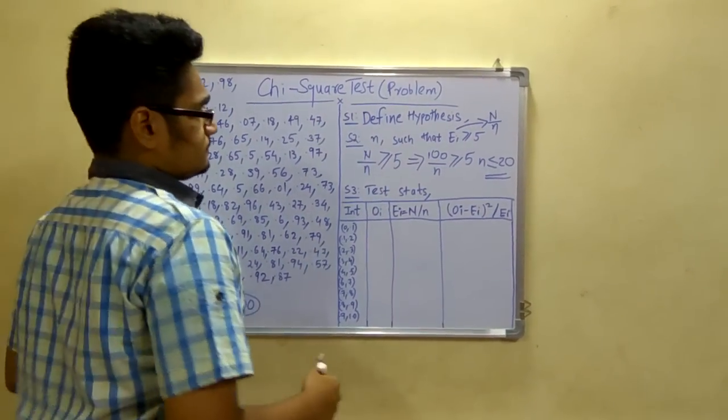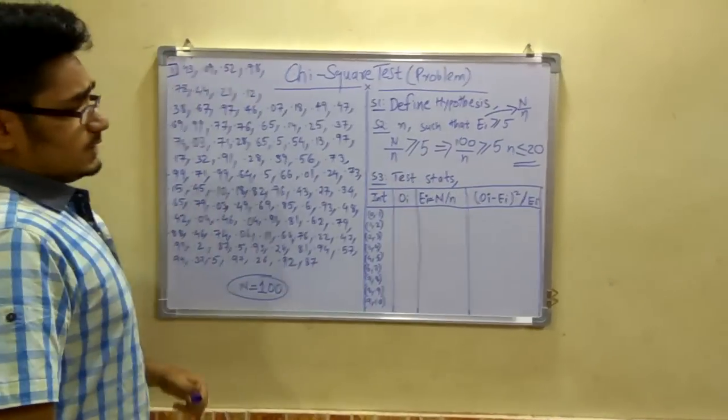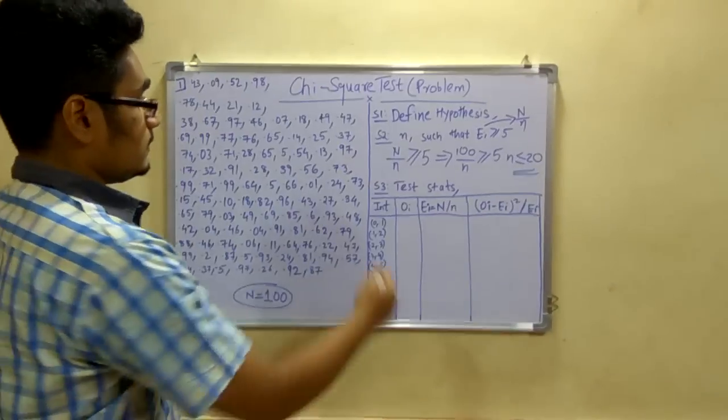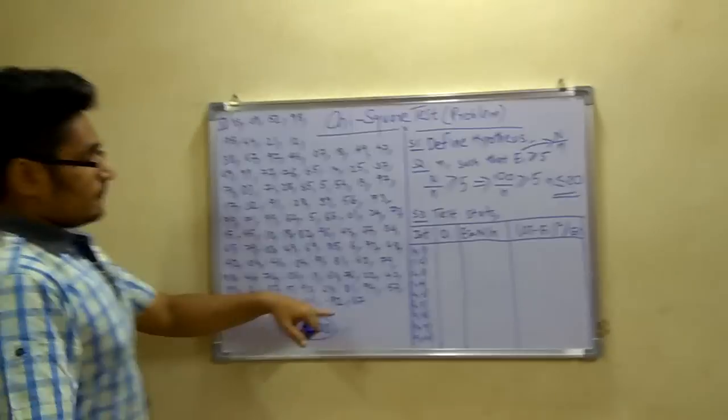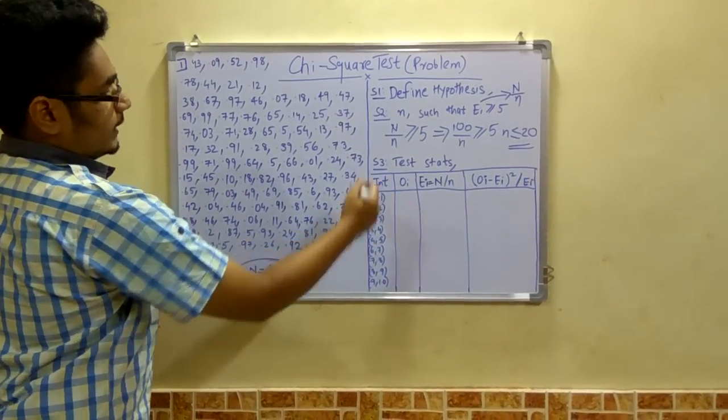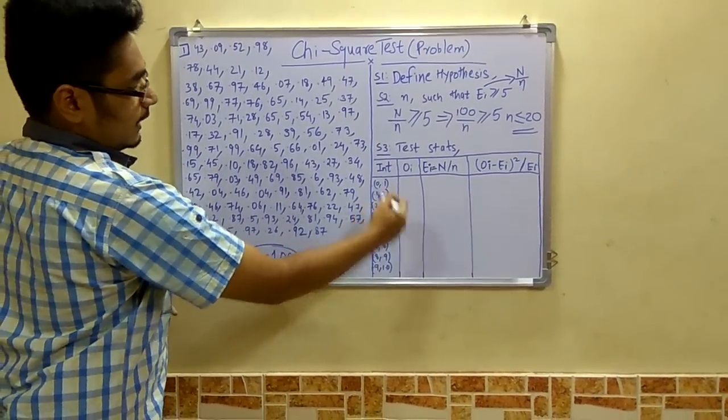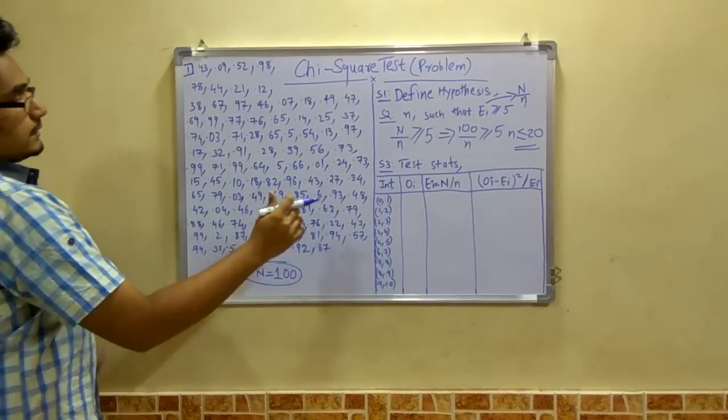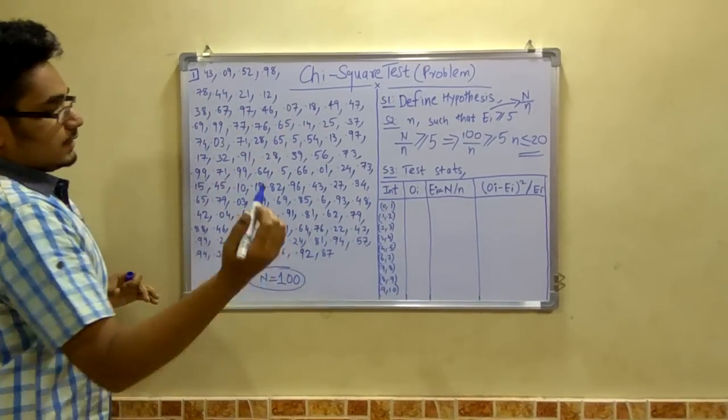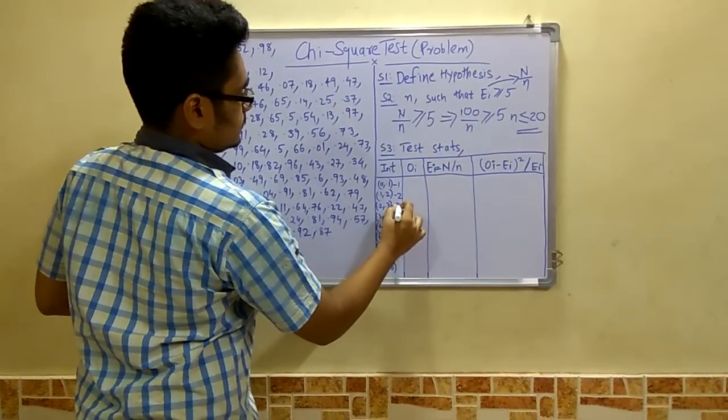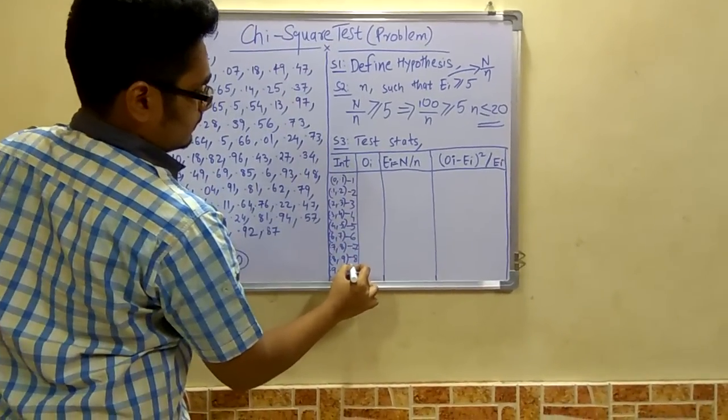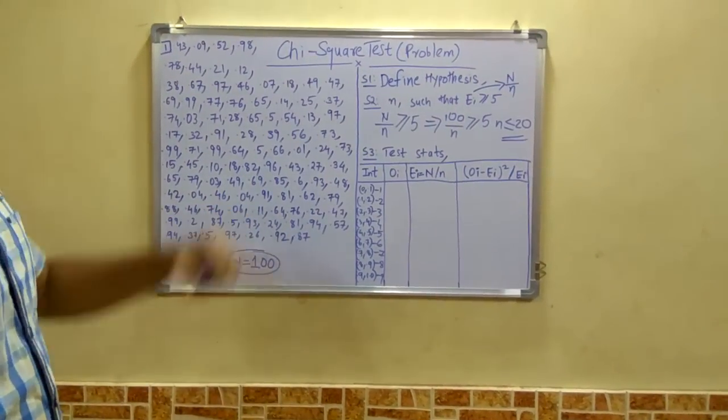Now third step is to compute the test statistics. In this we have to make four columns. First column stands for the interval, as you can see. There is from zero to one, one is the maximum value and zero is the minimum value. So we take from zero to point one, point one to point two, point two to point three, likewise till one point zero. From this you have to count which numbers lies in this range, that is from zero to point one, which numbers lies in this range. So accordingly we will number it as one, this has two, this has three, this has four, five, six, seven, eight, nine.